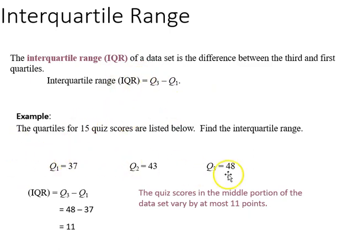In this case, we had q1 37, q2 43, and q3 48. We subtract 37 from 48, we get 11, so 11 is our interquartile range.